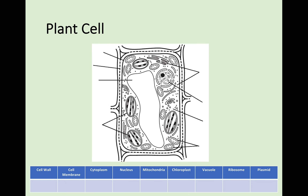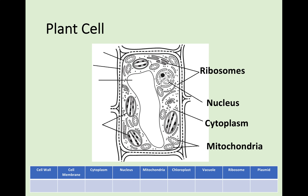Next we move on to a plant cell. The plant cell contains all the organelles we have just looked at in the animal cell, but there are some others that are unique to plant cells as well. Starting off on the right, we again have ribosomes that are dotted around the cell. Next you have the nucleus - it looks slightly different in this diagram but usually it is just a black dot found in the cell. We also have the cytoplasm, which is the space between all of these different structures. We have the mitochondria that we have looked at previously as well.